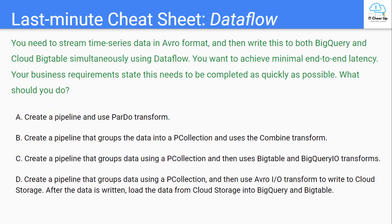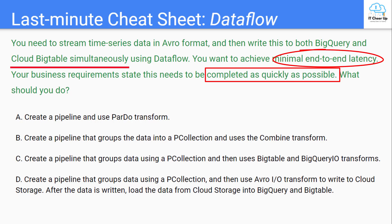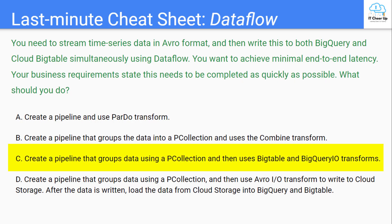How about this one? Pause the video and try to answer it yourself. The keywords are: write to both BigQuery and Bigtable simultaneously, and minimize end-to-end latency to complete as quickly as possible. You can use Apache Beam's provided Bigtable and BigQuery IO transforms to complete the pipeline quickly, so you don't need to use Cloud Storage as an intermediary. Loading data from Cloud Storage to BigQuery and Bigtable would increase latency. So the correct answer is C.